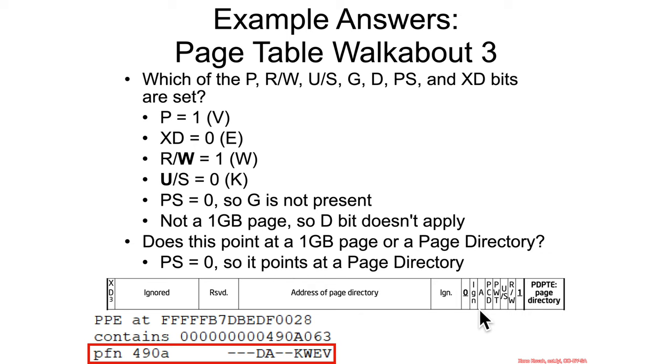So it's ignored, and the operating system could use that bit for something else. But for all intents and purposes, we say that if it's not a one gigabyte page, the D bit doesn't exist.